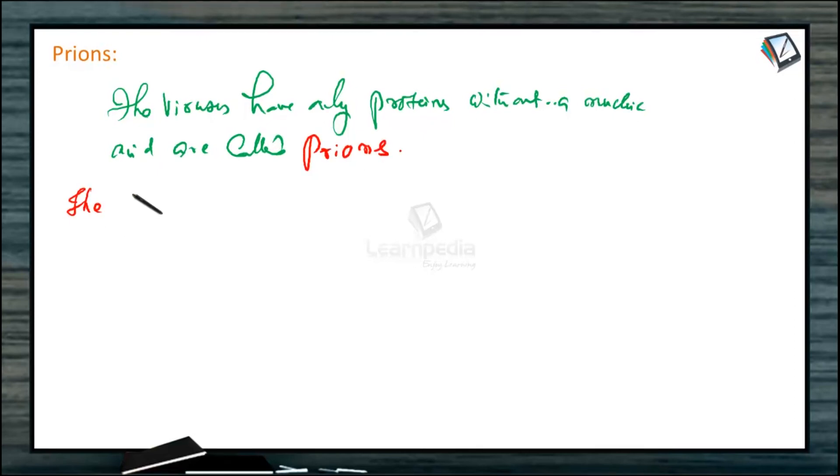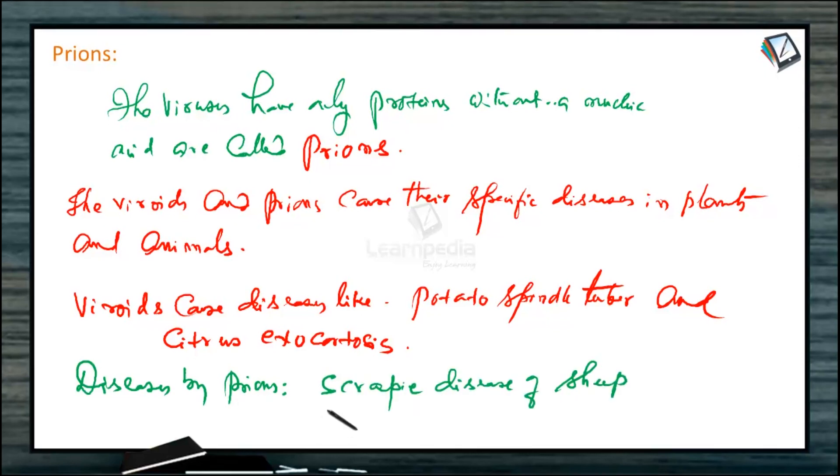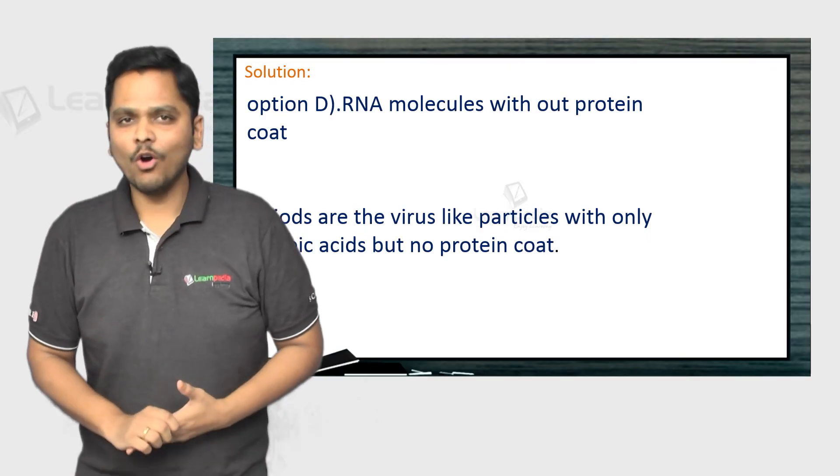The viroids and prions cause their specific diseases in plants and animals. Diseases caused by viroids: potato spindle tuber and citrus exocortosis disease. Diseases by prions: scrapie disease of sheep, mad cow disease of cattle.